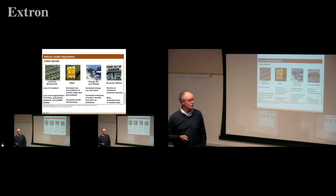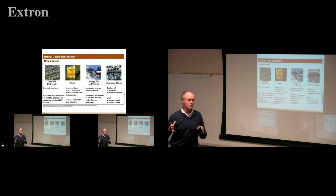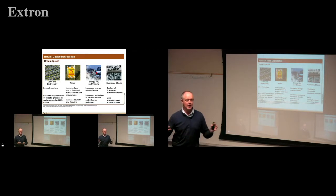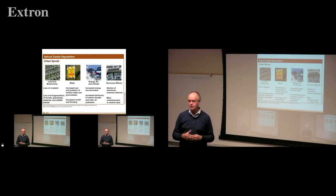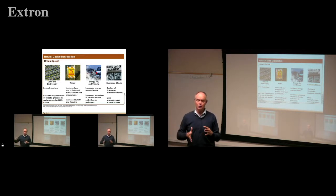Looking at natural capital degradation from urban sprawl: it causes loss of cropland, loss and fragmentation of grassland, forest, wetlands, and wildlife habitat. Locally, the roadrunner has a very big territory — they like to move around and travel between houses. The more places that are built in between on their routes, it breaks it up. That's one example.